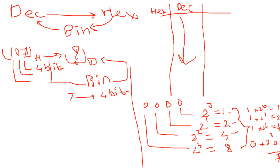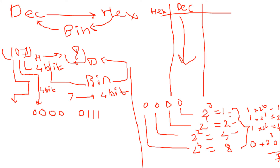Similarly, for 0, all 4 bits are 0, so its equivalent binary pattern is 0000. For 1, only the last digit is 1, so the pattern becomes 0001. Combining these, the complete binary equivalent of 107h is 0001 0000 0111.